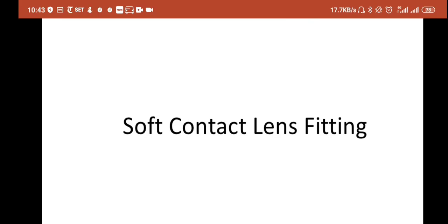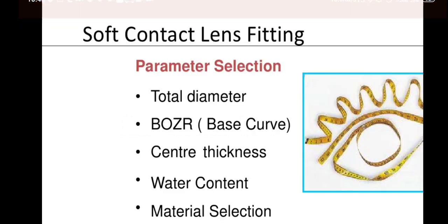The fitting philosophy of soft contact lenses requires several parameters: total diameter of the contact lens, base curve or back optic zone radius, center thickness, water content, and material selection.